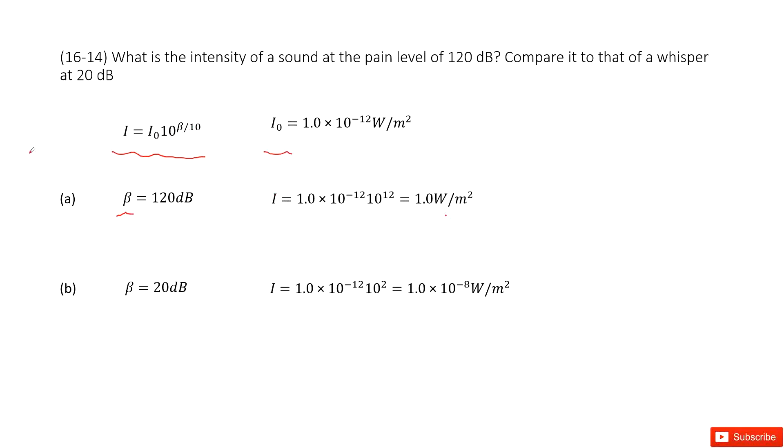And then the second case, this beta becomes 20. Same thing, we still input the beta and I0 inside, get the I there. Thank you.